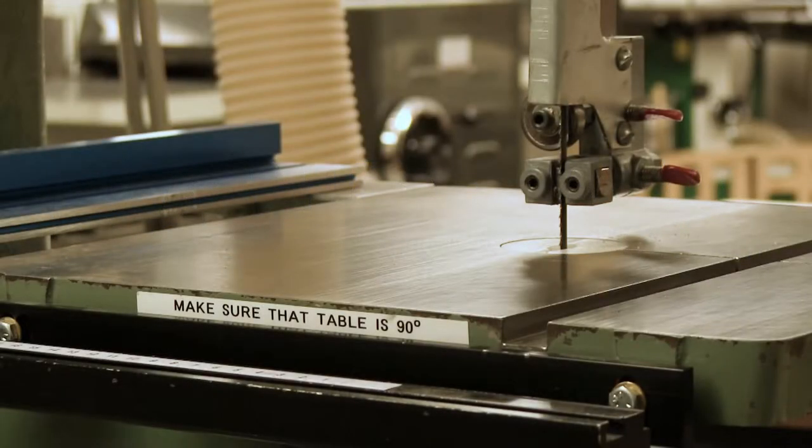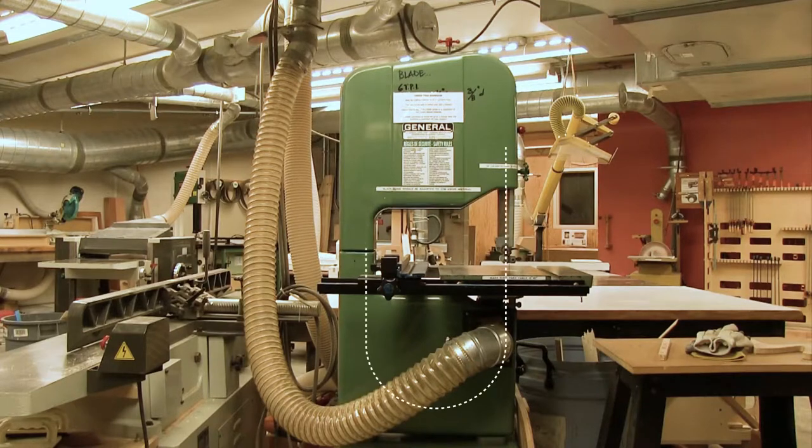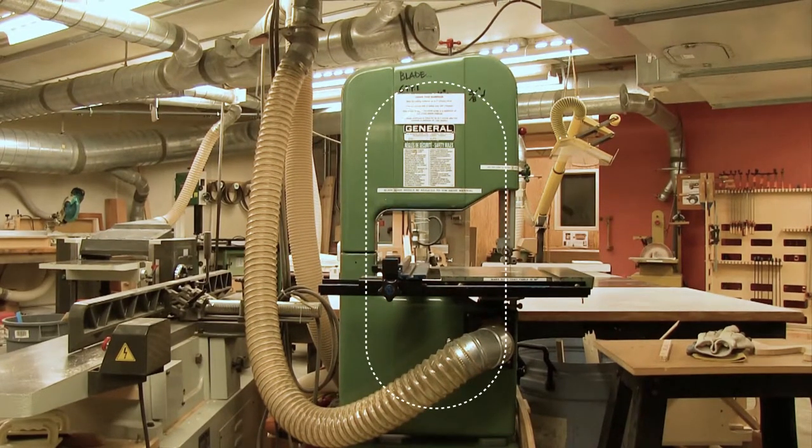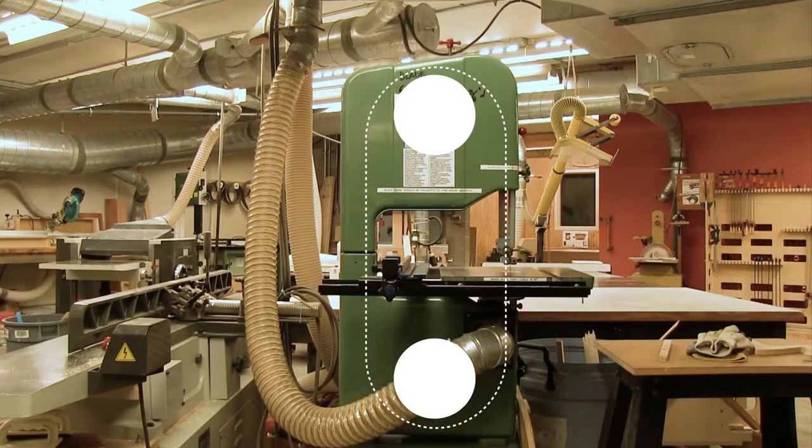The band saw is a key piece of equipment in any woodworking shop. The blade on the band saw is a long continuous band of toothed metal. That band is stretched between two or more mechanically driven wheels.